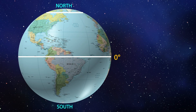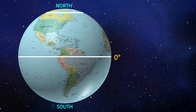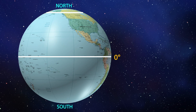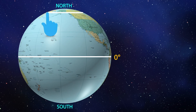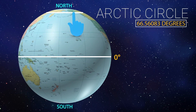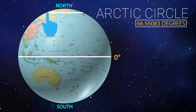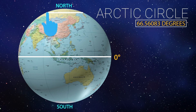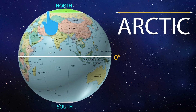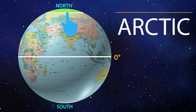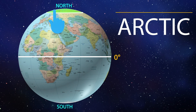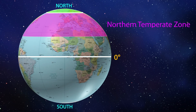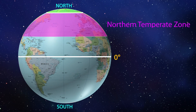The Arctic Circle is at the latitude of 66.56083 degrees north of the equator. Everything north of this circle is known as the Arctic, and the zone just to the south of this circle is the Northern Temperate Zone.